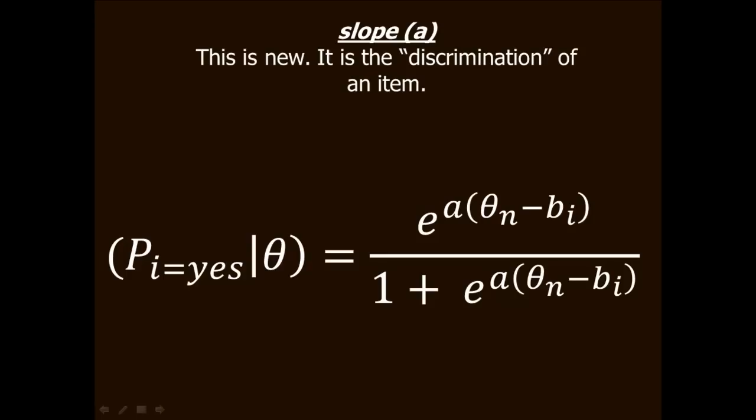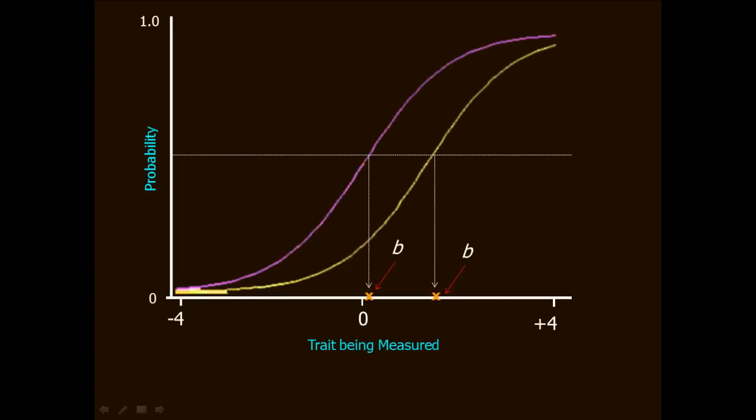One other thing before we leave this. I introduced the term B for difficulty to you early on. But I never told you its relationship to the trace line. You've already seen the relationship of discrimination to the trace line. So now it's time to explain why I kept asking you to repeat a phrase aloud at the risk of embarrassing yourself. For the dichotomous model, B, the difficulty of an item is its, wait for it, wait for it, and now say it with me, the point of median probability.